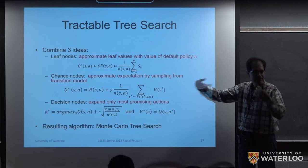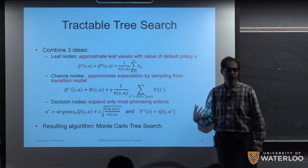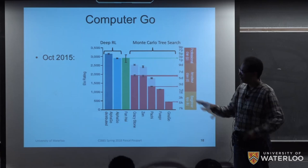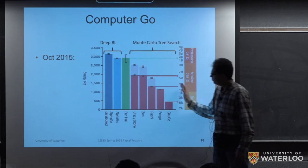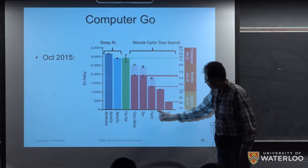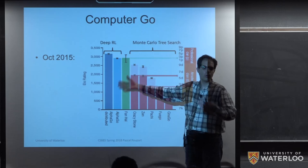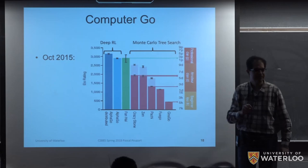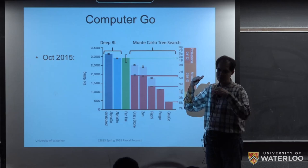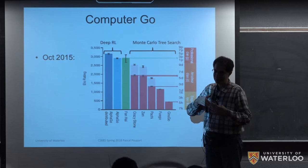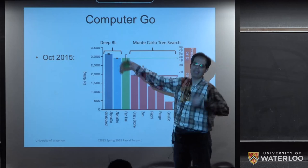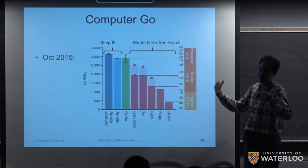Monte Carlo Tree Search became very popular in the game of Go. For computer Go, MCTS was the state of the art for many years. Up until 2015, when deep reinforcement learning took over — though even AlphaGo in its early versions combined deep RL with Monte Carlo Tree Search as a final step. We'll explain MCTS and see the variant used in AlphaGo.